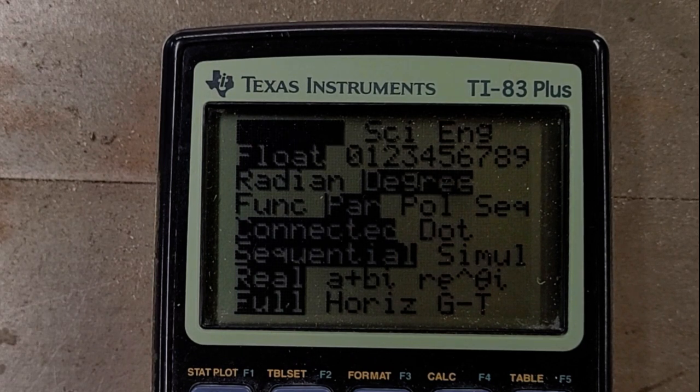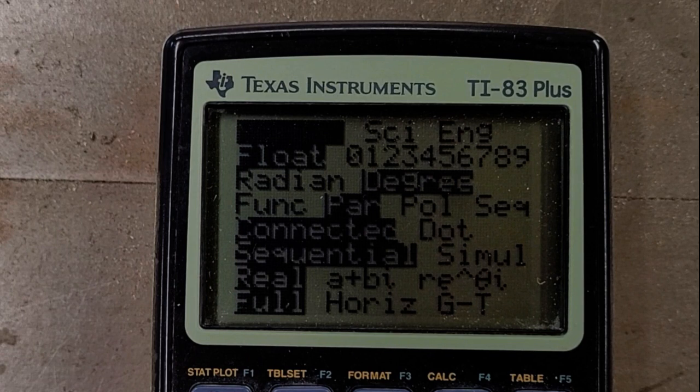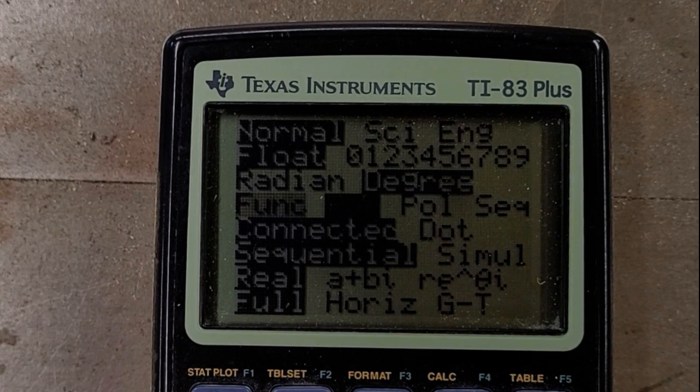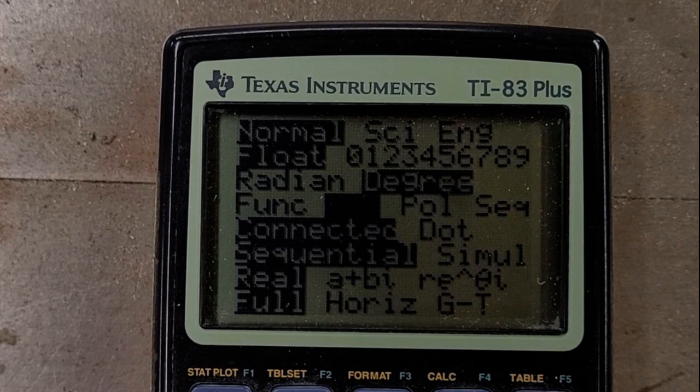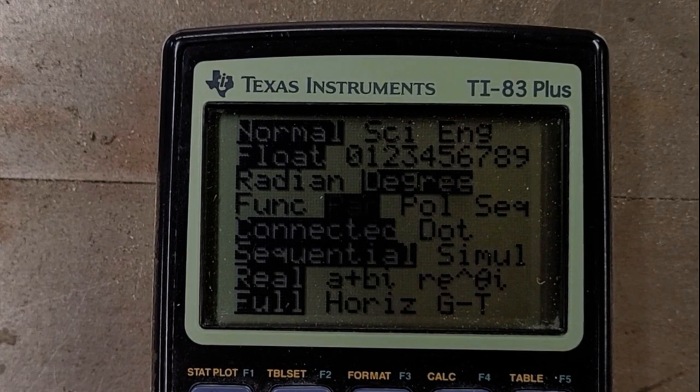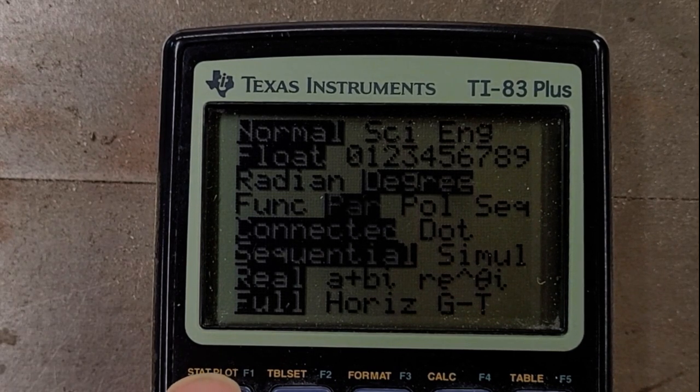So just in case you're using calculator for something else, you want to make sure that you're in degree mode, okay? Because those projectile motion formulas, the theta is in degrees. You also want to make sure you're in parametric mode, so of course we get that third variable called the parameter. So when you go to the y equals screen...